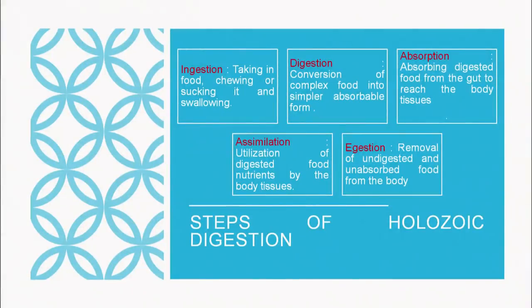Then the last step is egestion — the removal of waste or undigested food from the body. For this process, fibers play a very important role. So whatever diet you take should always be rich in fibers, so that the digestive process functions properly.